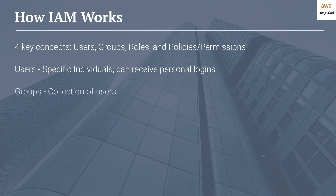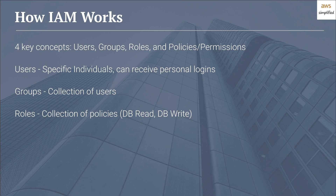Groups simply refer to a collection of users with a common theme. An example could be intern students and senior developers — obviously we want intern students to have a very different set of permissions than a senior developer. Roles act as a collection of policies. For example, you can define a role that has both database read and database write permissions to a specific AWS DynamoDB table.